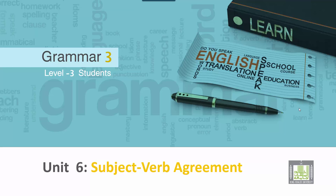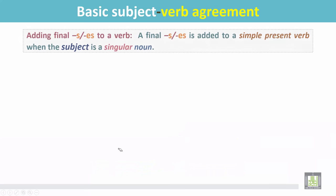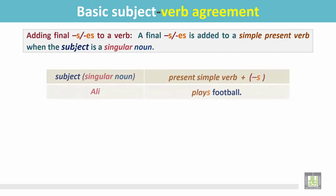Grammar 3 for level 3 students, unit 6: subject-verb agreement. Basic subject-verb agreement — adding a final S or ES to a verb. A final S or ES is added to a simple present verb when the subject is a singular noun. In this chart, we see Ali; it is a singular noun.